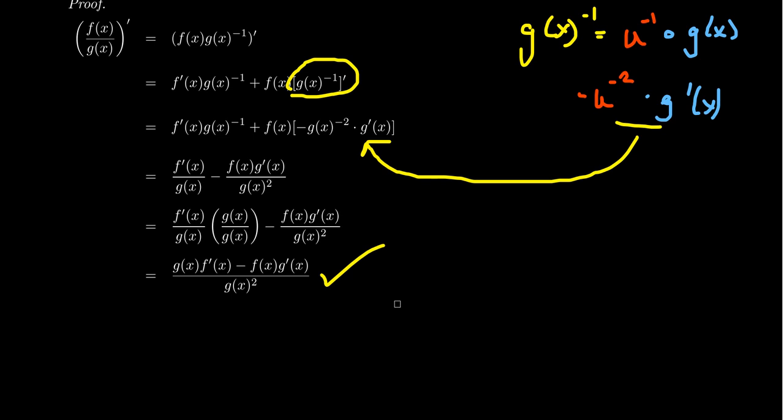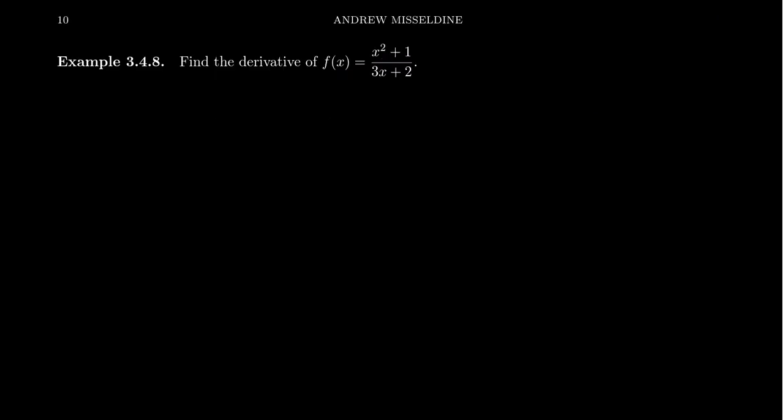But it turns out that this proof also illustrates another interesting observation. It shows us how we can calculate the derivative of a quotient without using the quotient rule. If you just combine the product rule with the chain rule, you can always calculate the derivative of a function. Let's take a look at such a thing. Let's find the derivative of f of x, which is the function x squared plus 1 over 3x plus 2 with this idea of the chain rule.